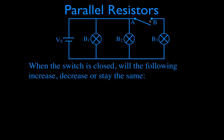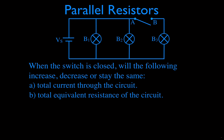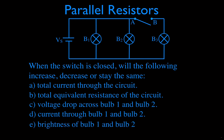We want to know: will the total current of the circuit, the total equivalent resistance of the circuit, the voltage drop across bulb 1 and bulb 2, the current through bulb 1 and 2, and the brightness — will all of those things increase, decrease, or stay the same when we close that switch?